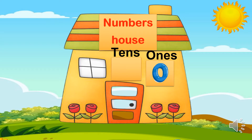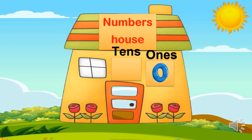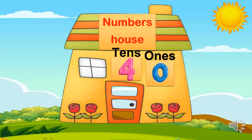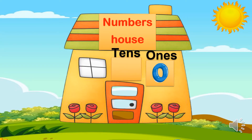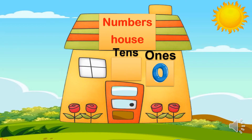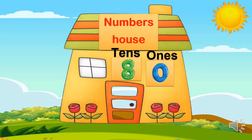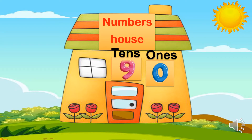We put twenty: zero in ones and two in tens. Then thirty: zero in ones place and three in tens place. Forty, fifty, sixty, seventy, eighty, ninety.